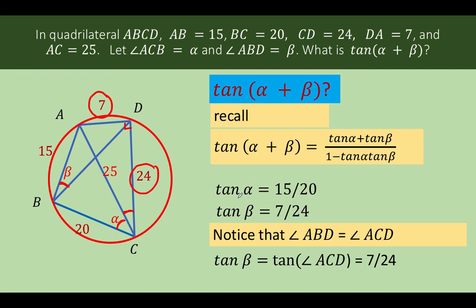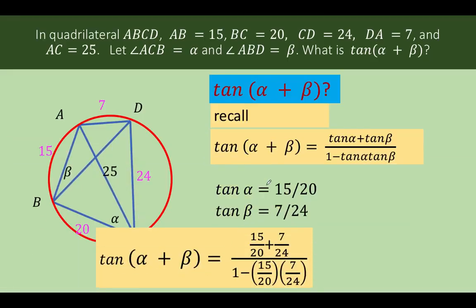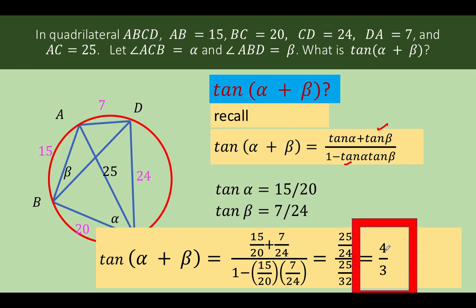At this point, it's just a matter of substituting these two values to this identity. Using this formula, our tangent alpha is 15 over 20, tangent beta is 7 over 24, all over 1 minus tangent alpha, which is 15 over 20, times tangent of beta, which is 7 over 24. Simplifying further, the numerator can be simplified as 25 over 24, and the denominator is now simplified as 25 over 32. Simplifying this complex fraction, we arrive at a value of 4 over 3. This is now the value of tangent of alpha plus beta in this given problem.